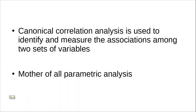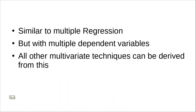Canonical correlation analysis is very similar to multiple regression. However, in multiple regression we only have one dependent variable and multiple independent variables. Here it is different — we have multiple independent variables but we also have multiple dependent variables, and that's what makes it different from multiple regression.